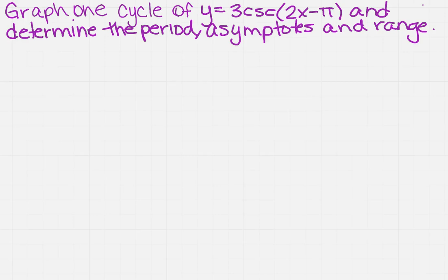I want to graph one cycle of y equals 3 cosecant of 2x minus pi and I'm also going to need to determine the period, the asymptotes, and the range.